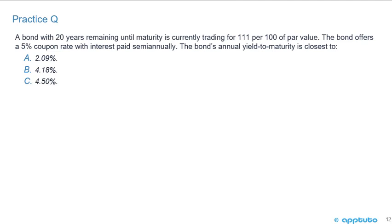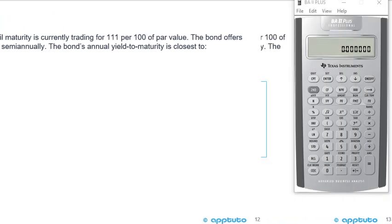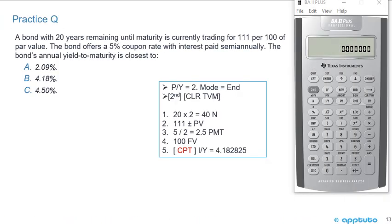Practice question 3: A bond with 20 years remaining until maturity is currently trading at 111 per 100 of par value. The bond offers a 5% coupon rate with interest paid semi-annually. The bond's annual yield to maturity is closest to: (a) 2.09%, (b) 4.18%, or (c) 4.50%. Since it's semi-annual, verify 2nd P/Y is set to two.